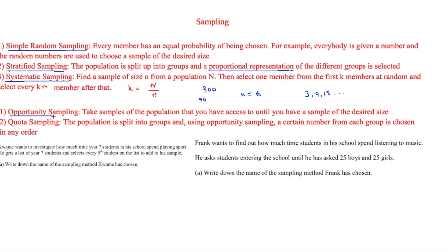Opportunity sampling is where you take samples from the population that you have access to until you have a sample of the desired size. For example, if you wanted to sample students in school you could stand at the gates and as people walked in they would be part of your sample — literally taking whoever comes along.